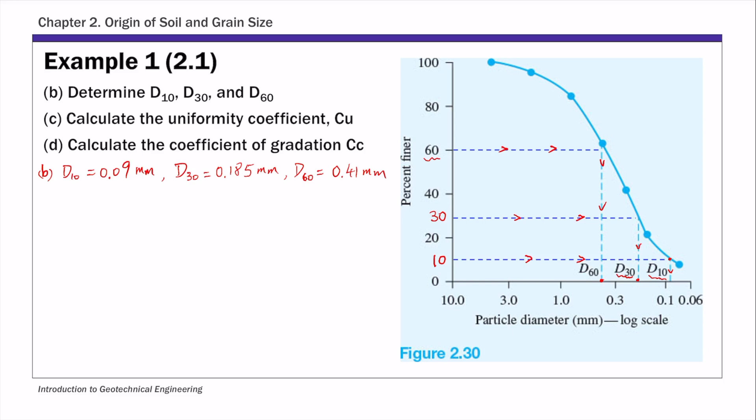And once you have these three values, it's very easy to calculate these two coefficients. So part c, this is coefficient of uniformity, c sub u. And by definition, this is d60 over d10. If you plug in the values we just read from the curve, 0.41 for d60, 0.09 for d10, you get 4.56. So that's the uniformity coefficient, cu.